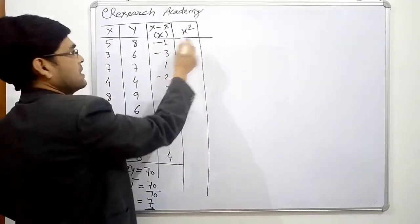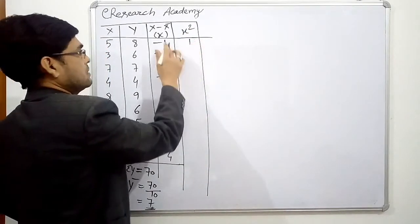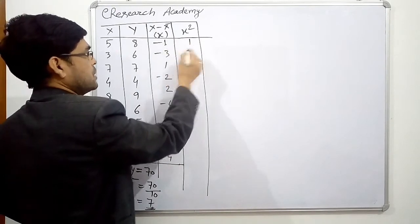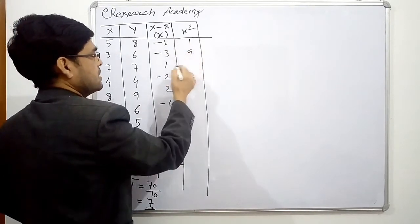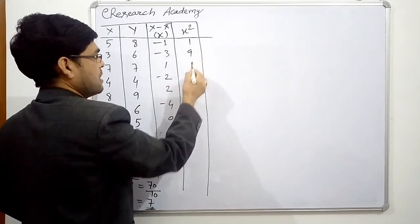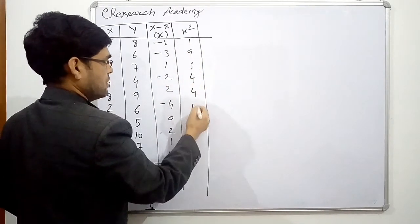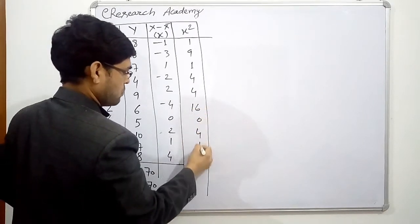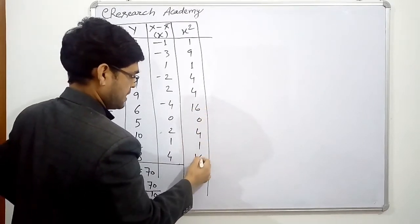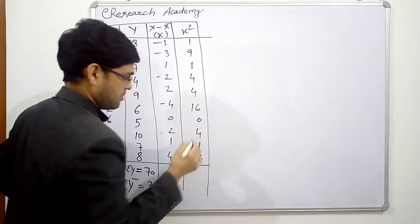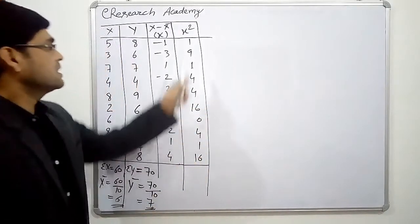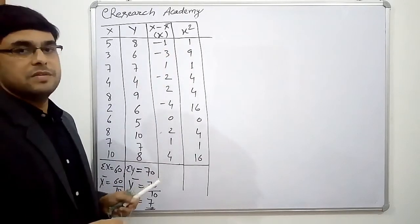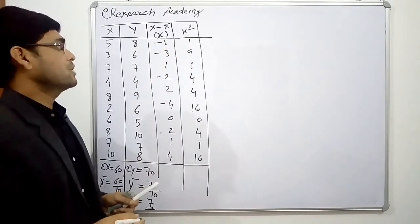Next we need the square of these deviations, x². So: 1×1 = 1, 3×3 = 9, 1, 4, 4, 16, 0, 4, 1, and 16. These are the squared values of the deviation from the actual mean for the X series.